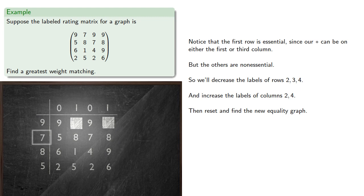In the second row, 7 plus 0 isn't 5, so that's not going to be in our equality graph. But the other entries are equal to the sum of the row and column labels, so we include them. And likewise for the third and fourth rows.